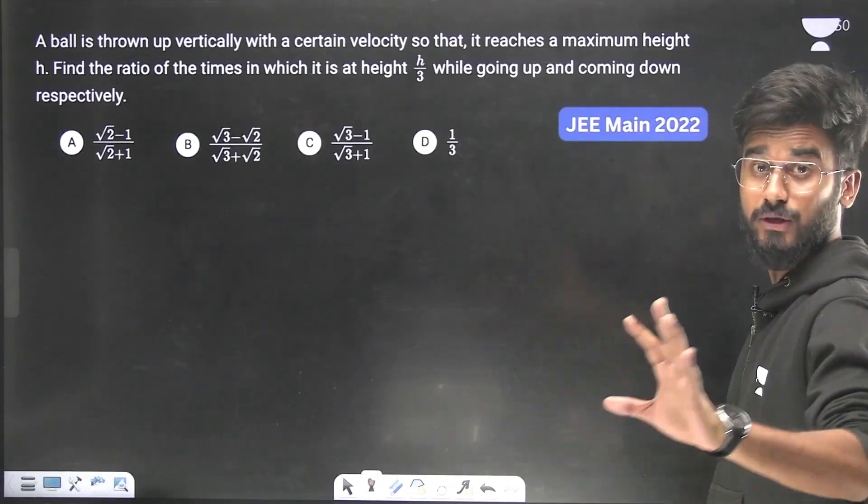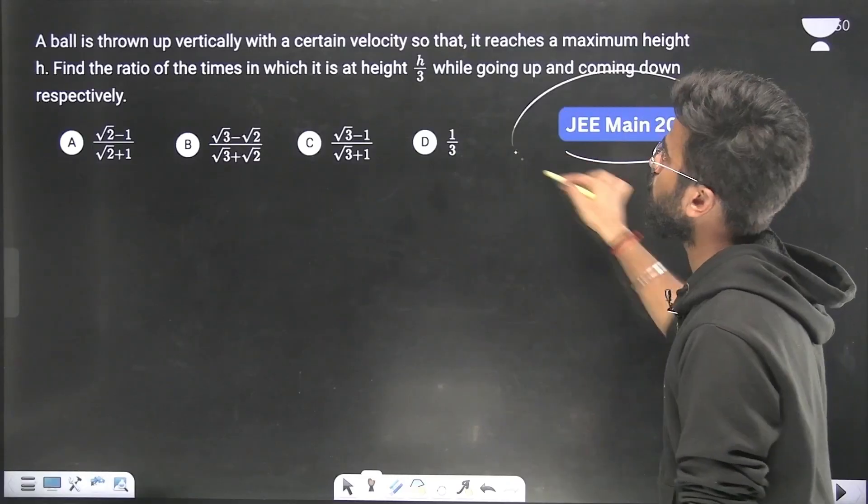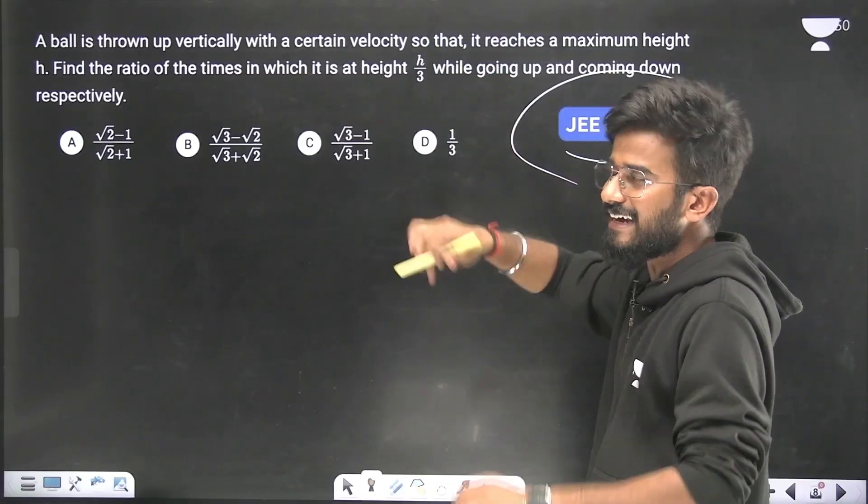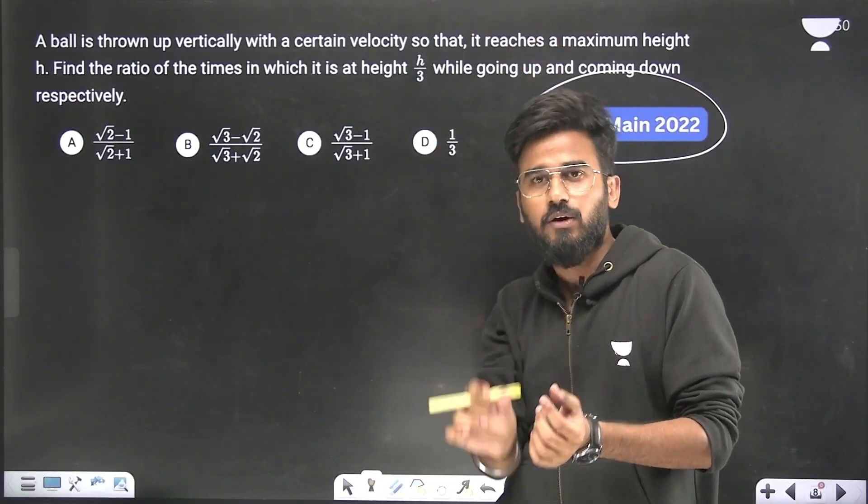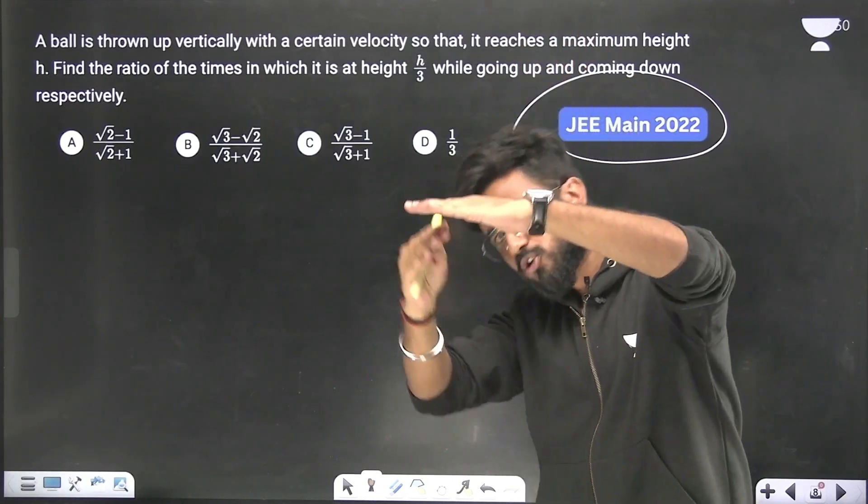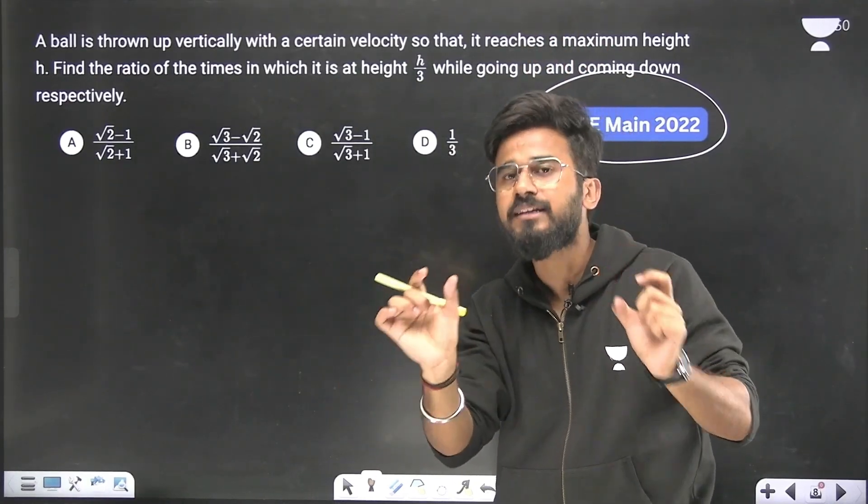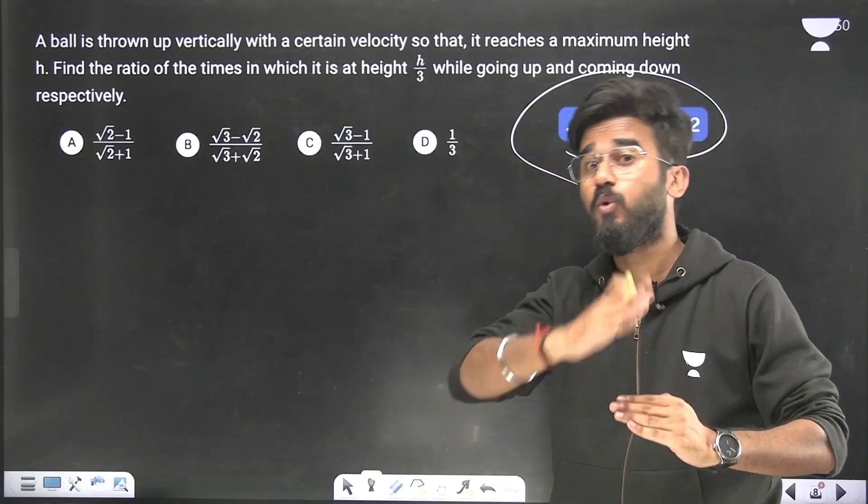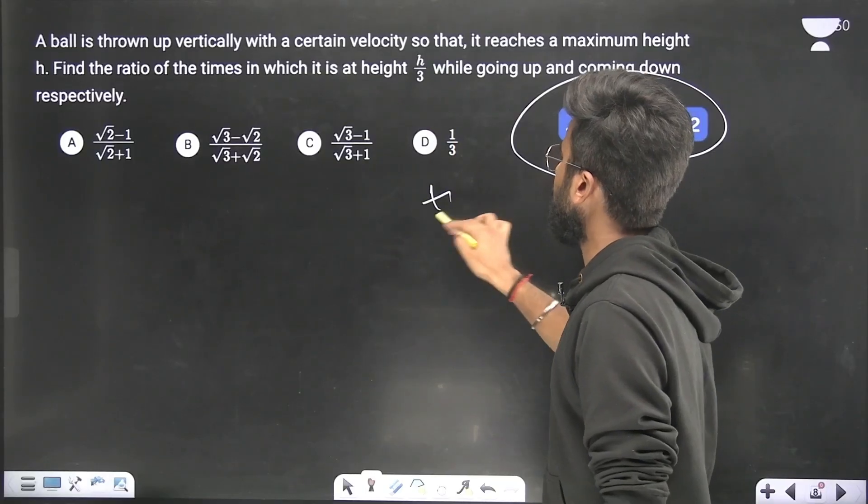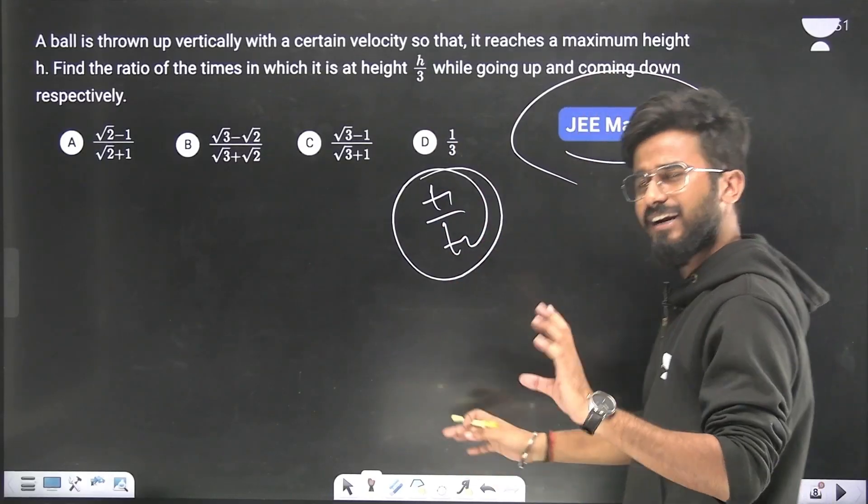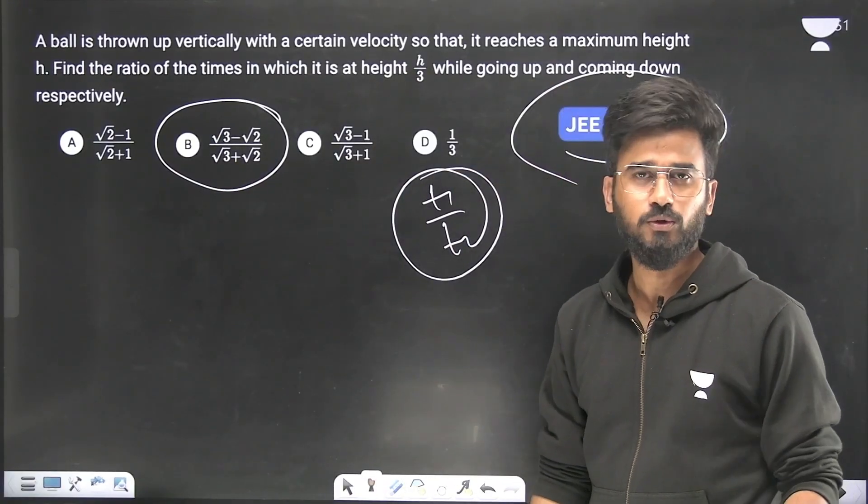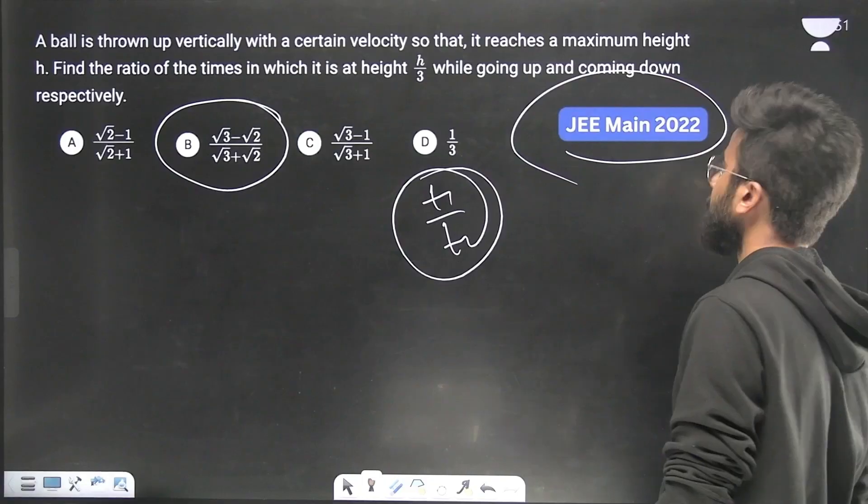Let us talk about something else. One more question from JEE Main 2022. It simply said the ball is thrown upward vertically. And it is like it is going upward and coming downward. So it will cross the height h by 3 in going upward, and coming downward it will also cross the height h by 3. So you have to find the ratio of those times when it is at the height h by 3 in going upwards and coming downwards. You just have to find t1 by t2. And the answer was root 3 minus root 2 upon root 3 plus root 2. It was in 2022.